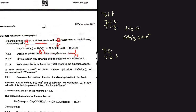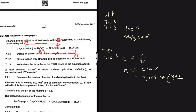7.2.1: a flask contains 300 cm³ of dilute sodium hydroxide (NaOH) of concentration 0.167 mol/dm³. Calculate the number of moles of NaOH. We know concentration equals moles divided by volume, so moles equals concentration multiplied by volume: 0.167 × 0.3 (converting 300 cm³ to dm³ by dividing by 1000) = 0.0501 moles.